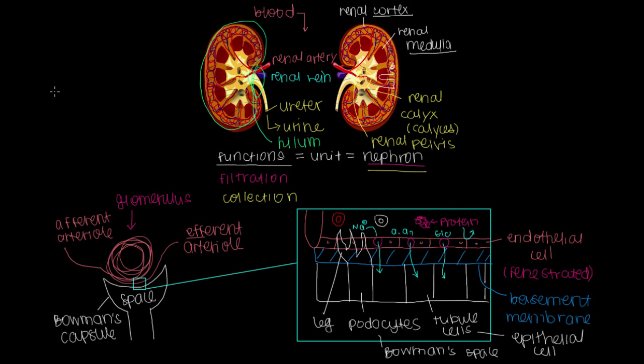What would happen if we look at our afferent and efferent arterioles and change the diameter of the vessel? What does that do to the rate of filtration? How does the diameter of our vessels change the rate of filtration?